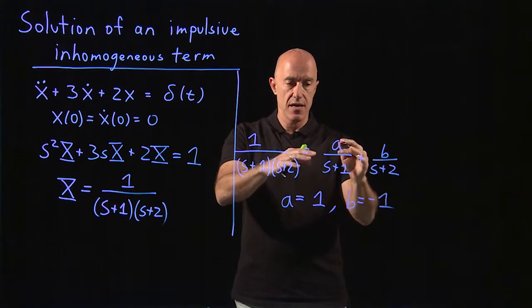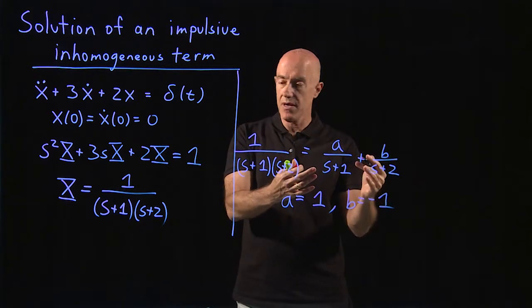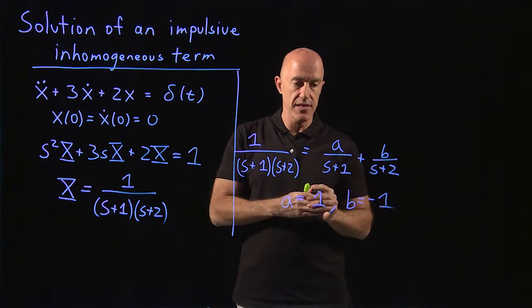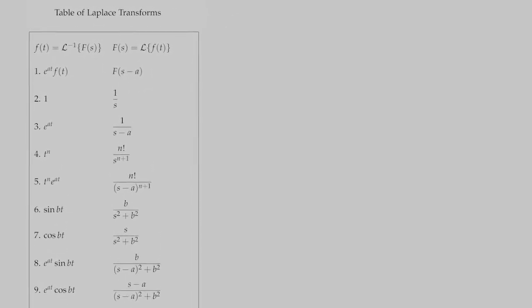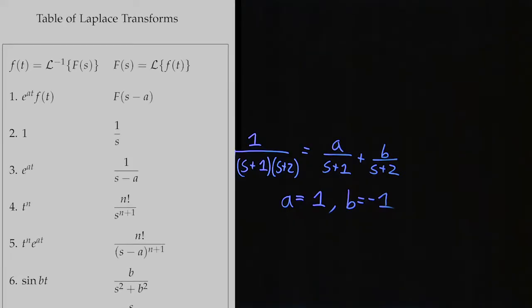Then we need to take the inverse Laplace transform of this to get x of t. So let's go back to the table. The inverse Laplace transform of 1 over s plus 1, we can use line 3, where a is equal to negative 1. So that would be e to the minus t. The inverse Laplace transform of b over s plus 2 is also from line 3, with a equals minus 2. So that would be e to the minus 2t.